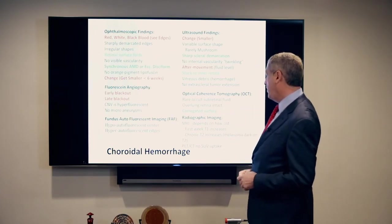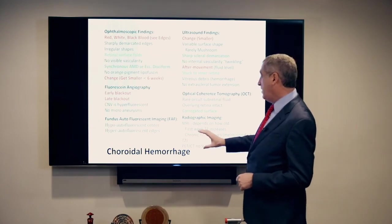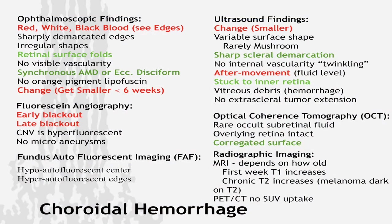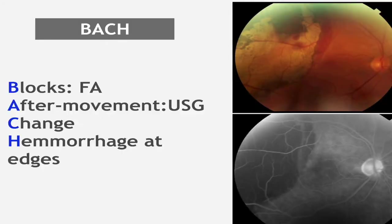There is literature on doing MRIs on eccentric discoforms and choroidal hemorrhages — they also change over time, but unless you're committed to doing serial MRIs, I don't find them that helpful. My mnemonic for choroidal hemorrhage is BACH: it Blocks fluorescence, there's After movement seen on ultrasound, they Change relatively rapidly over time, and look at the edges for Hemorrhage.